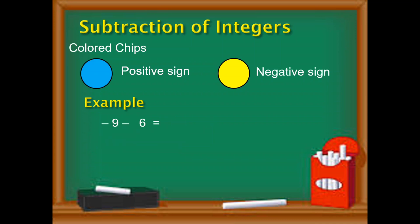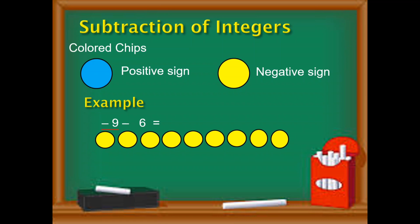Let's work on the next example: negative nine minus six. The minuend is negative nine, meaning nine yellow chips. This time we need to remove six, and this six is positive — the minus sign is an operation, not the sign of six. So we need to remove six blue chips, pero walang blue chips. So obviously, we will be using the zero pair. Since six blue chips need to be removed, we need six zero pairs.